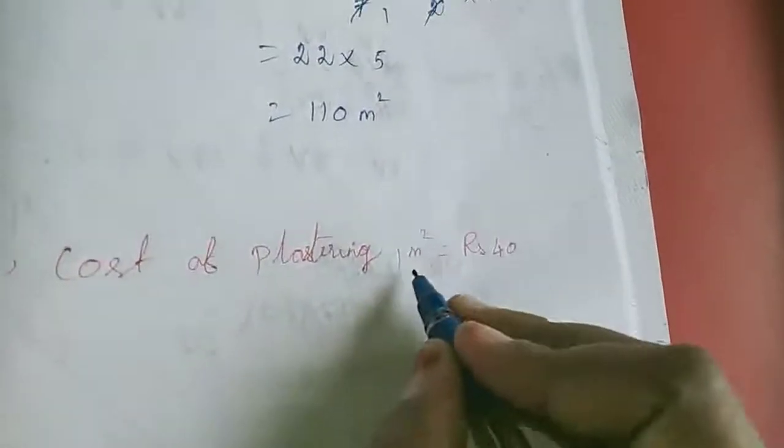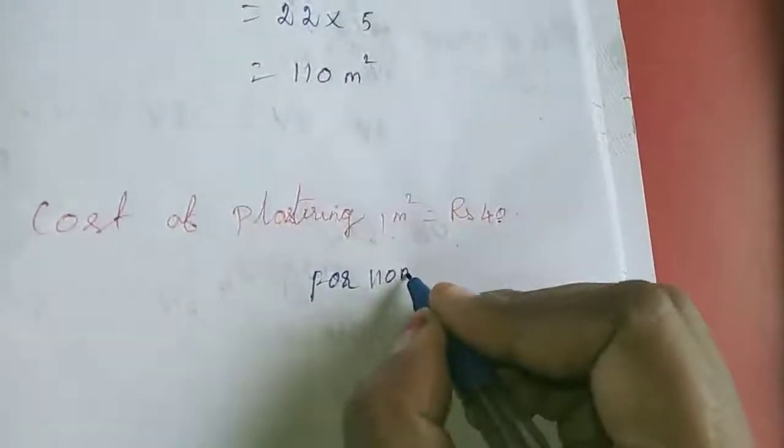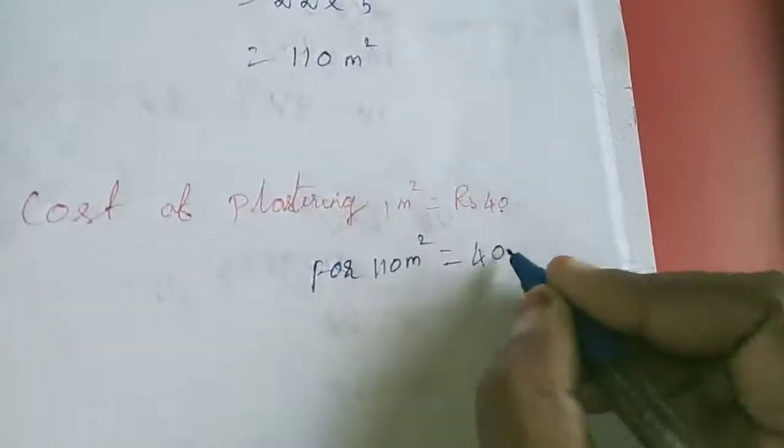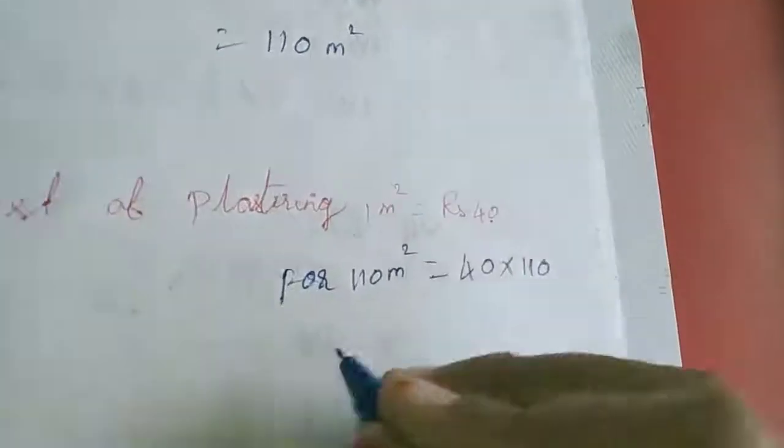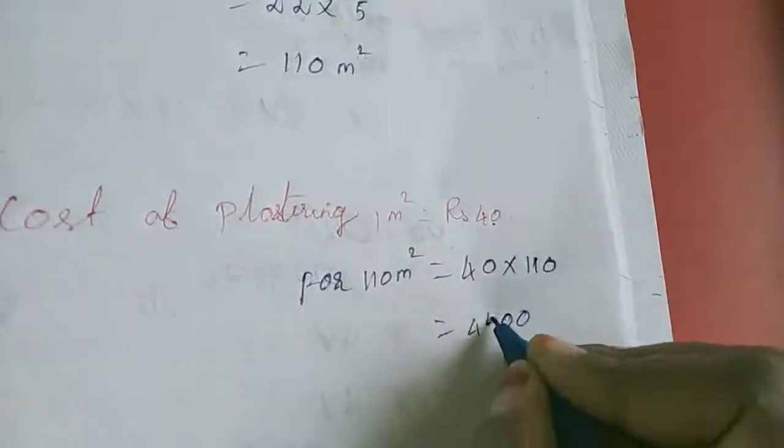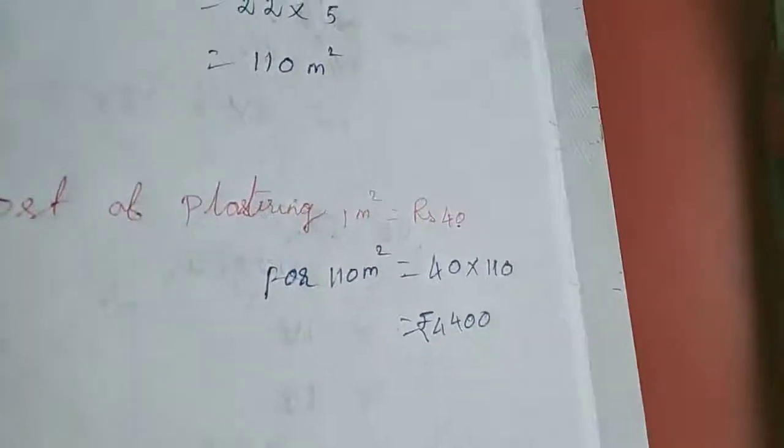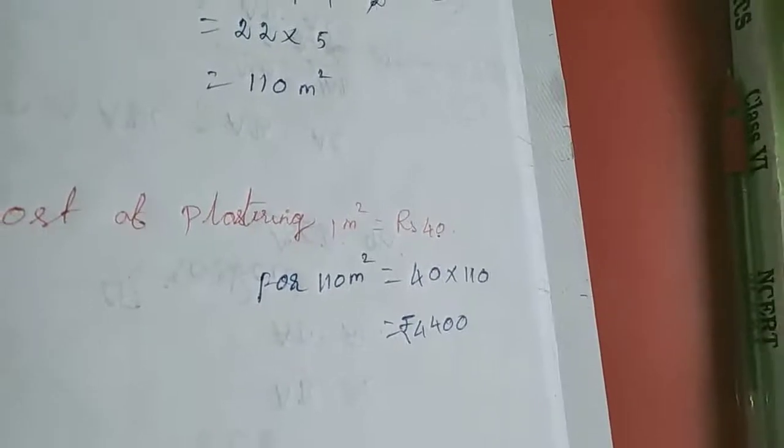1 meter square equal to 40 rupees, so for 110 meter square equal to 40 into 110. 4 into 11 is 44, so how much cost will it take? 4,400. Now we will move to the 8th sum.